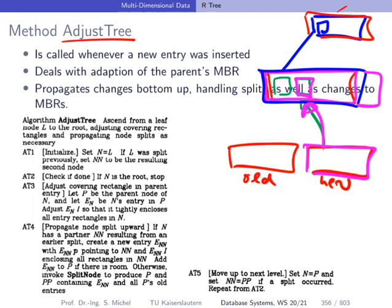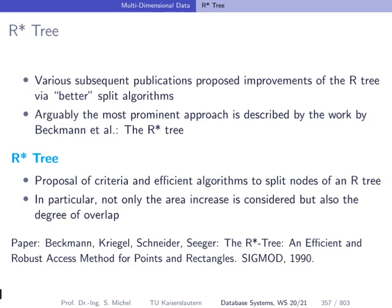An important observation is that the R-Tree is a balanced tree — going down from the root to the leaves always visits the same number of levels. This paper by Guttman is one of the seminal papers in database research, important both for research and practical purposes. There has been a multitude of follow-up work, and probably the most popular improvement is the so-called R*-tree, where the idea is to improve the splitting algorithm to create better trees in terms of performance. The R*-tree splitting algorithm also looks at the degree of overlap, which is an additional improvement over the initial R-Tree.